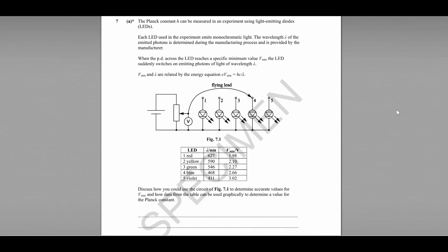So our question here is to discuss how you could use the circuit from figure 7.1 to determine accurate values for Vmin and how data from the table can be used to graphically determine the value of the Planck constant. So you need to divide your answer into two parts: first discussing how you're going to carry out the practical, and then how you're going to analyze that data in order to determine a value for the Planck constant graphically. Now it's probably easiest at this point if we look at the mark scheme and see the steps that the mark scheme describes.